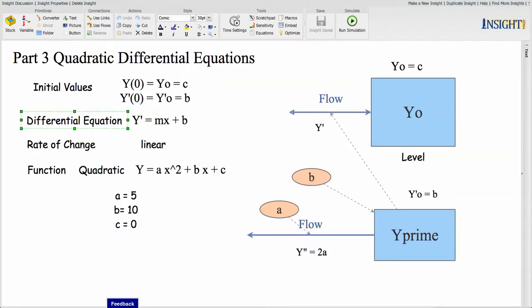The differential equation then is y prime equals mx plus b, m times x plus b. The rate of change of that is linear. Remember from your basic algebra that m is the slope of the line and b is the y-axis intercept, and there's a linear relationship between y prime and x.